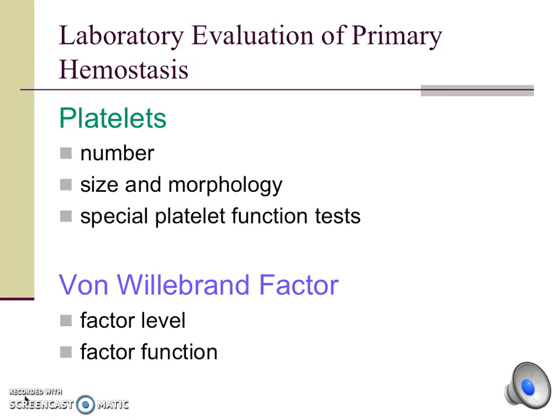In the laboratory, we can measure platelet number and function as well as von Willebrand factor level and function as the main indicators of primary hemostasis. Platelet number is easily obtained by ordering a complete blood count, also known as a CBC, or just a platelet count on the patient's blood sample. Additional platelet parameters, including size, granulation, and morphology, are obtained by reviewing a peripheral blood smear. Since platelet function is affected by numerous antiplatelet medications, a thorough medication history is also essential. Special platelet function tests are only used after first assessing the CBC, or platelet count, and blood film. Von Willebrand factor level and function are also assessed when evaluating primary hemostasis.